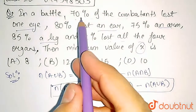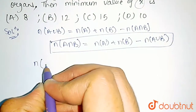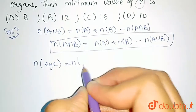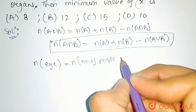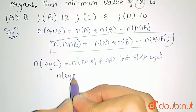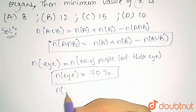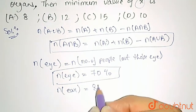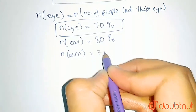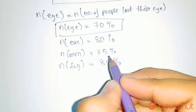Let us write the given data: 70% lost an eye, 80% lost an ear, 75% lost an arm. So the number of people who lost an eye is 70%, number of people who lost an ear is 80%, number of people who lost an arm is 75%, and number of people who lost a leg is 85%.